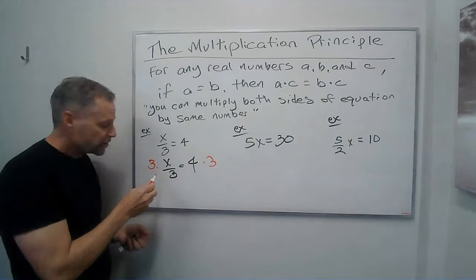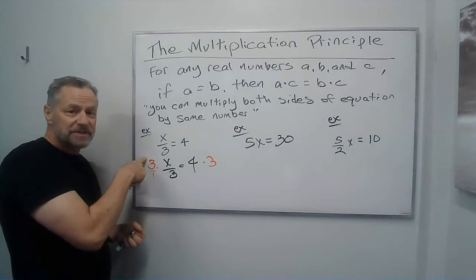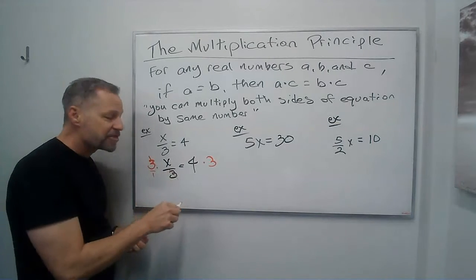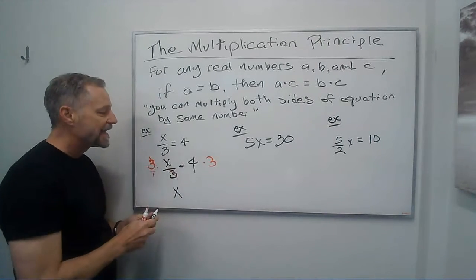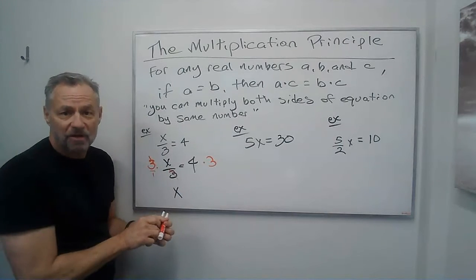And remember, 3 is really 3 over 1, so this 3 is in the numerator, this one's in the denominator. 3 divided by 3 is 1, 1x is just x, and then on the other side, 4 times 3 is 12, and I'm done.